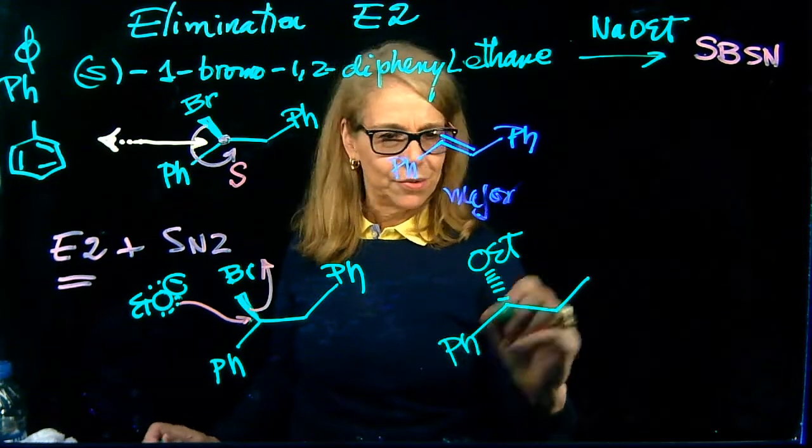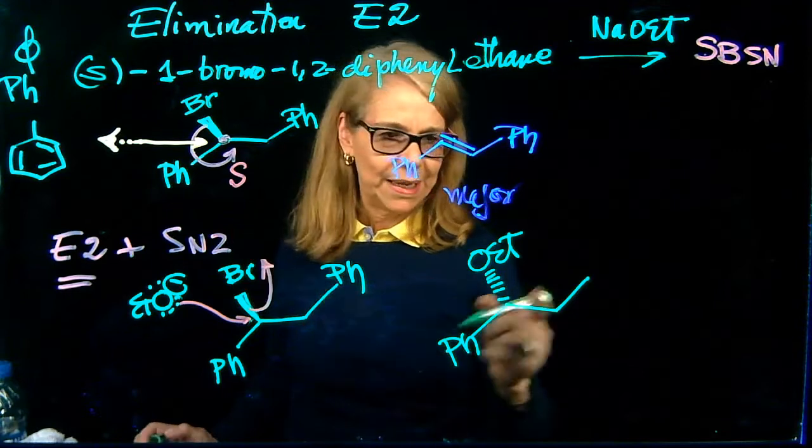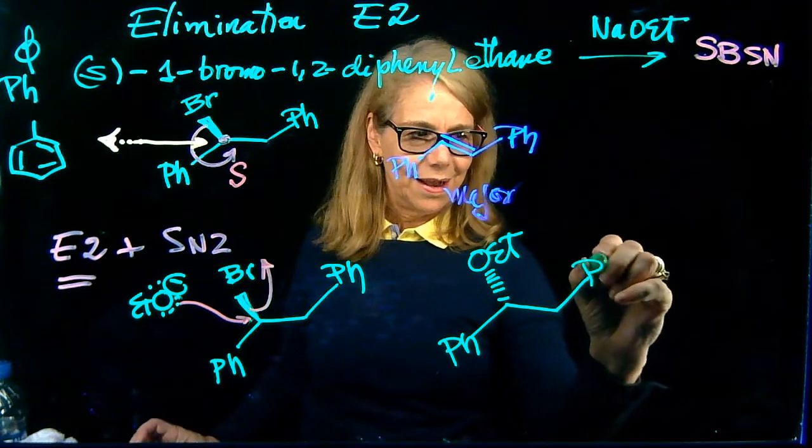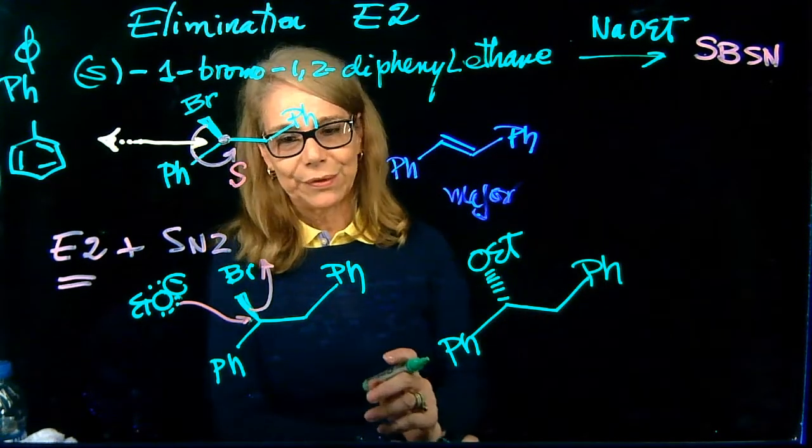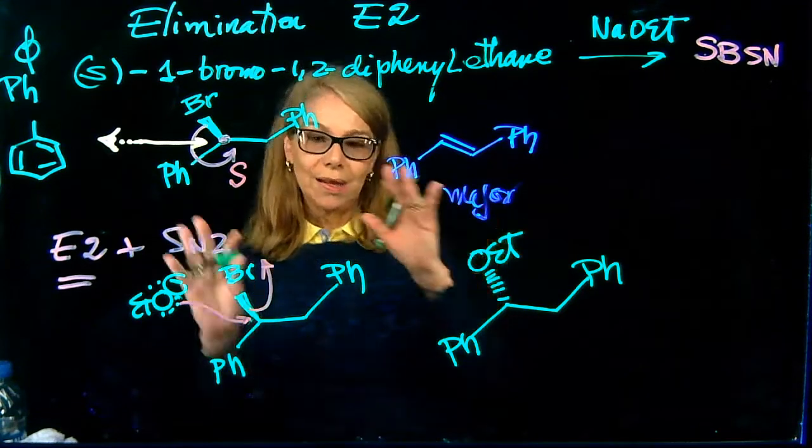So, the minor product, if this was S, this is R. That's the absolute configuration. Okay, so, recap.